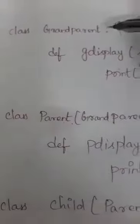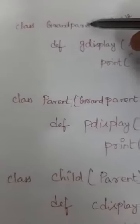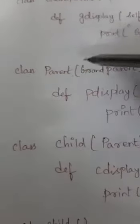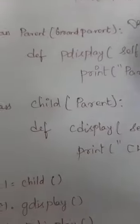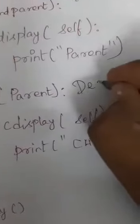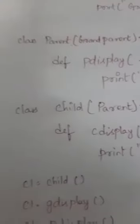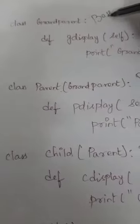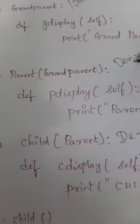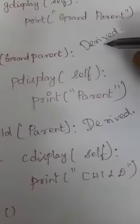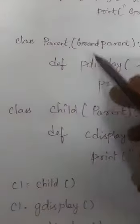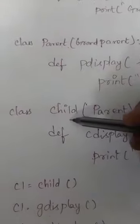I will show you an example. Here I am going to create three classes: grandparent, parent, and child. Grandparent is the base class, parent is the derived class, and child is another derived class. Multi-level inheritance means one base class and two derived classes, where the parent derived class acts as a base class for the child derived class.